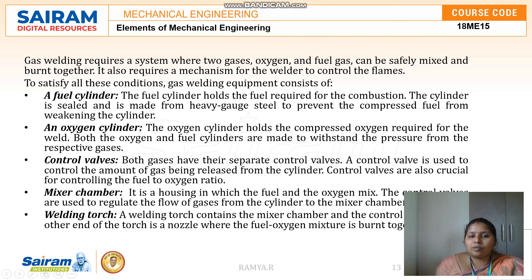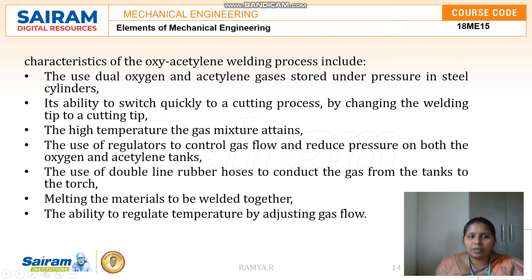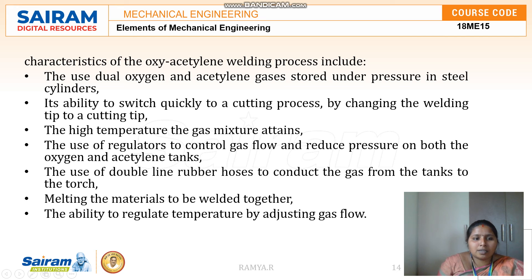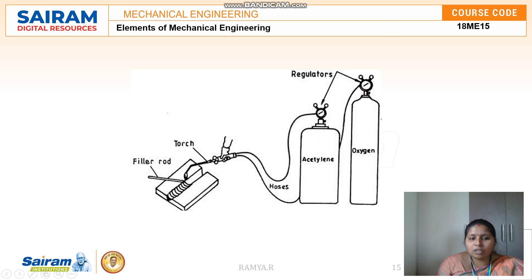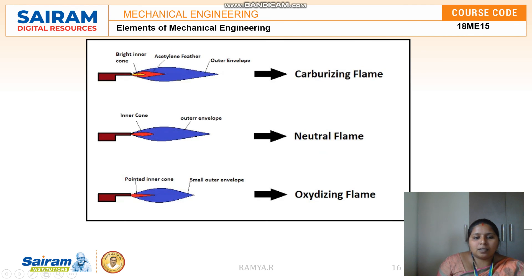The components required for oxyacetylene welding are a fuel cylinder, an oxygen cylinder, a control valve, a mixture chamber, and a welding torch. The control valve controls the supply of oxygen and acetylene. The two gases are stored under pressure in steel cylinders. This method allows quick switching to a cutting process by changing the welding tip to a cutting tip. In the arrangement, separate oxygen and acetylene cylinders are combined and sent to a torch, with a separate filler rod since no consumable electrode is used.